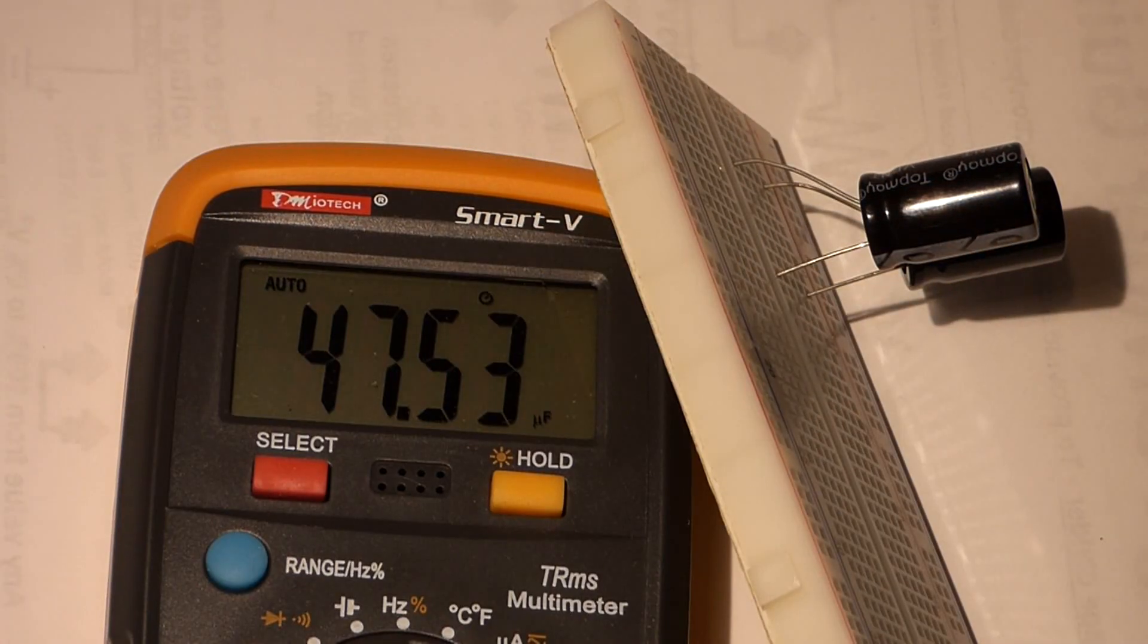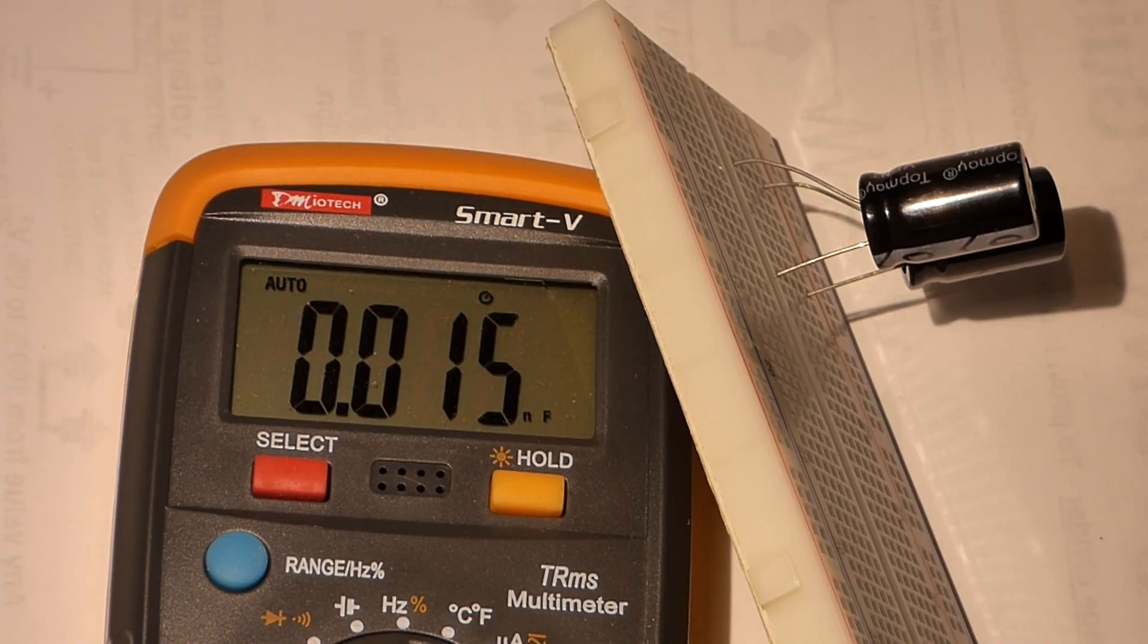So when you put these in parallel, the capacitance basically just adds up. And if they're all the same value, it's multiples. If you've got 5 of them and they're all rated at the same value, you'll have 5 times the capacitance. And they all will have the same voltage. That's whatever the voltage of the power source that charges them up to will be. And so parallel is pretty simple.